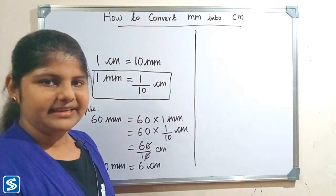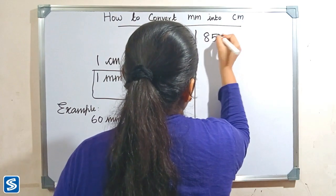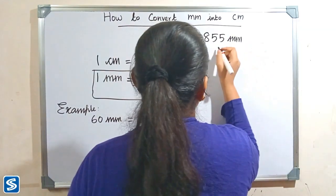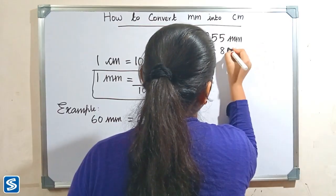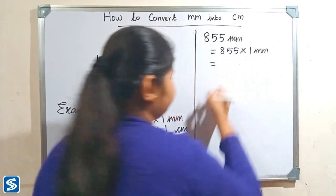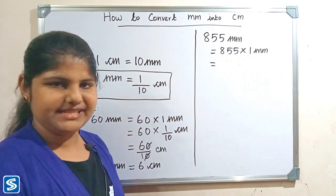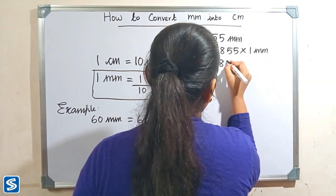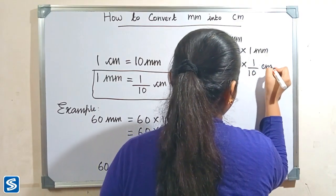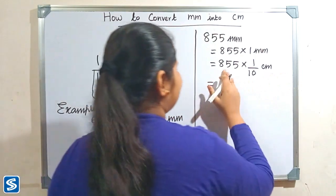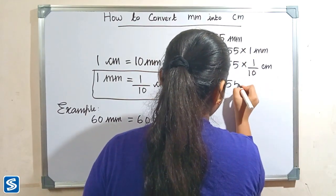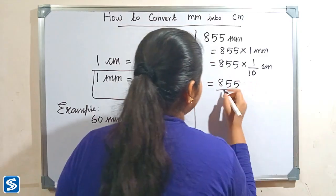For example, we can take 855 millimeter. So 855 millimeter can be written as 855 multiply 1 millimeter. Now substitute 1 by 10 centimeter. So 855 multiply 1 by 10 centimeter. 855 multiply 1 will be 855, so 855 by 10 centimeter.